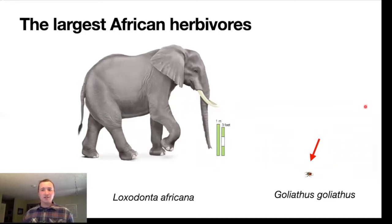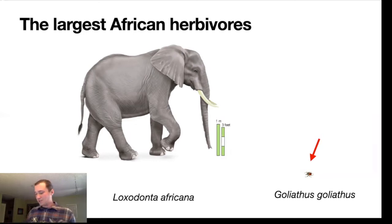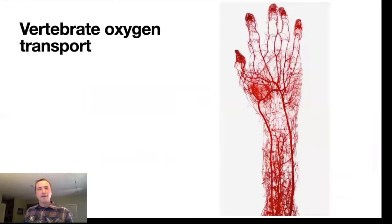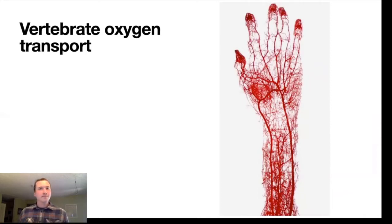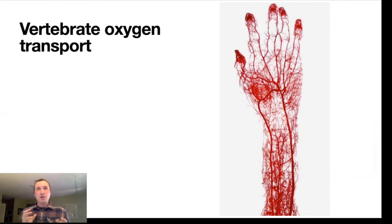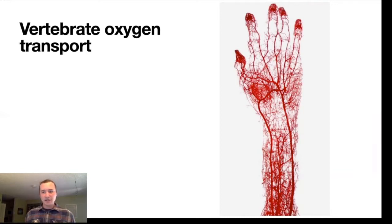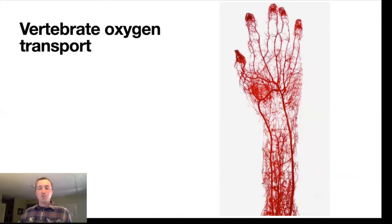Why is there this large size discrepancy between the largest insect and the largest vertebrate? We can gain an understanding of the differences between the elephant and the beetle by talking about how our respiratory system functions. Both insects and mammals are faced with the same problem: they need to deliver oxygen to their cells. Cells need oxygen because they're performing aerobic respiration, burning sugar using oxygen to make ATP.